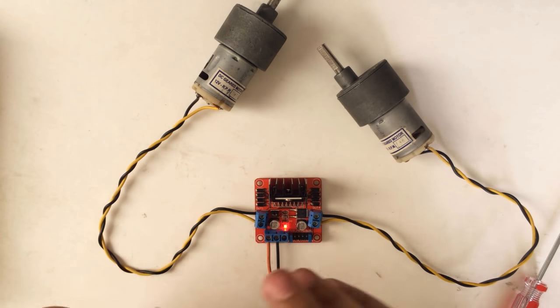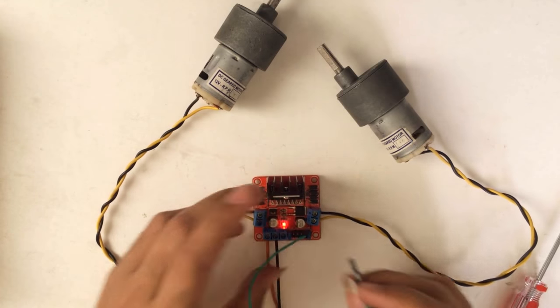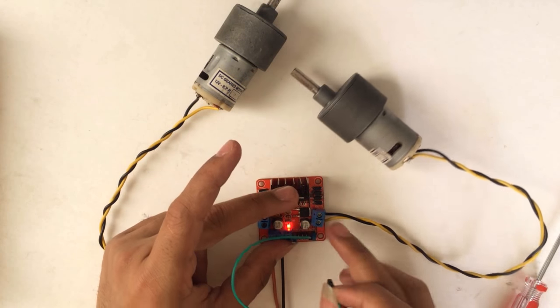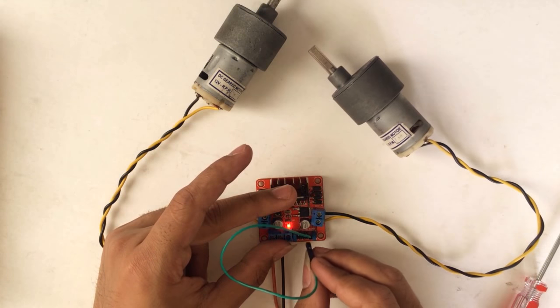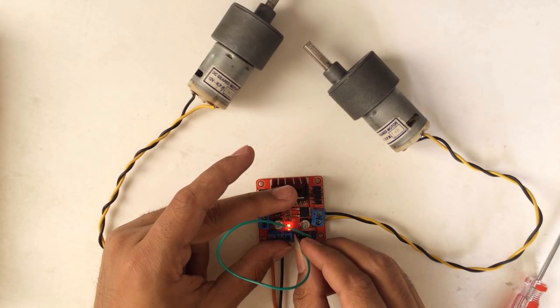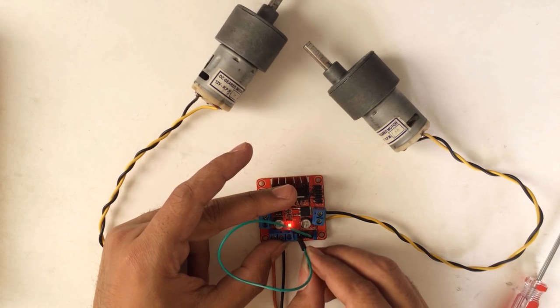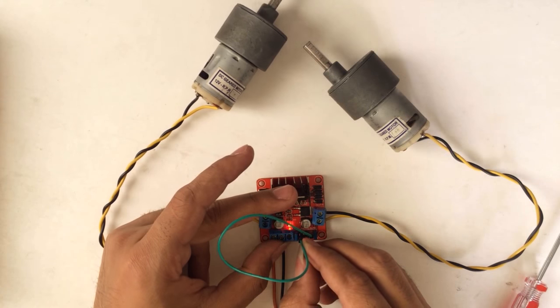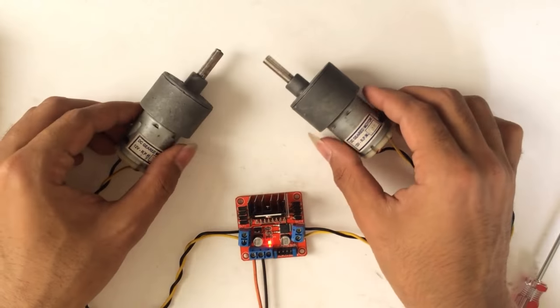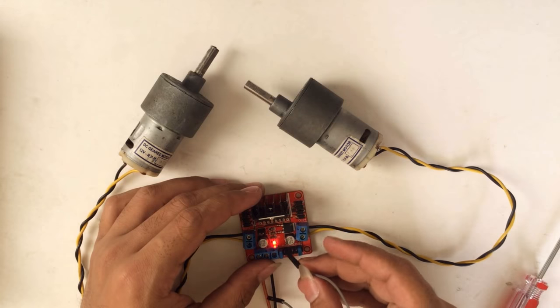Again we'll use our female to female connector, connect to 5 volt and give it a try. Motor B goes on in one direction and another direction. And Motor A also goes on in one direction and in reverse direction. So to run both motors simultaneously we need two input supply, both connected to 5 volt.